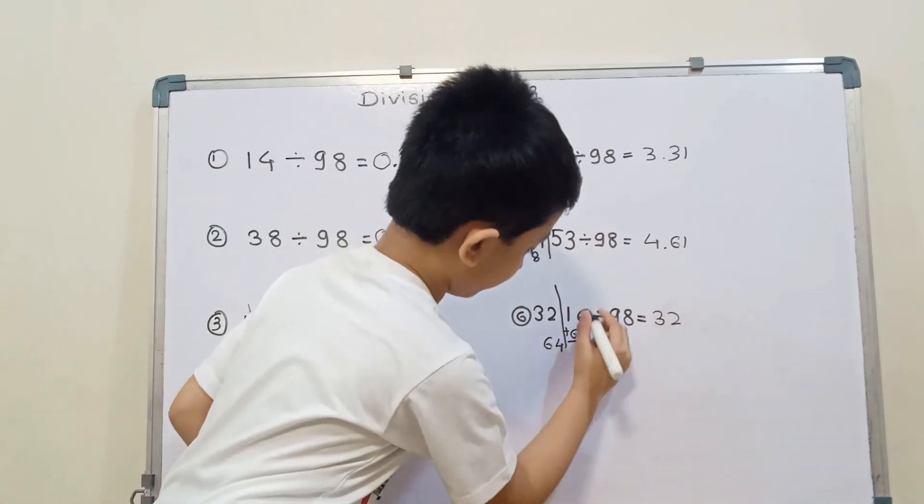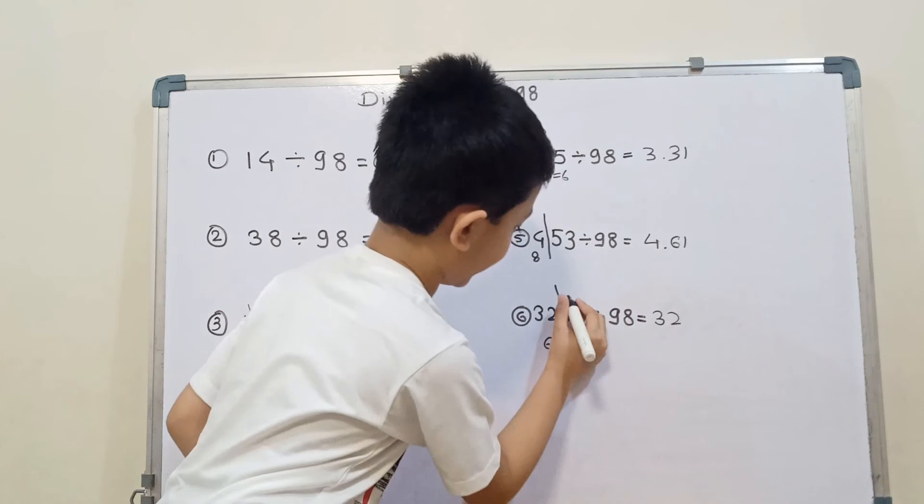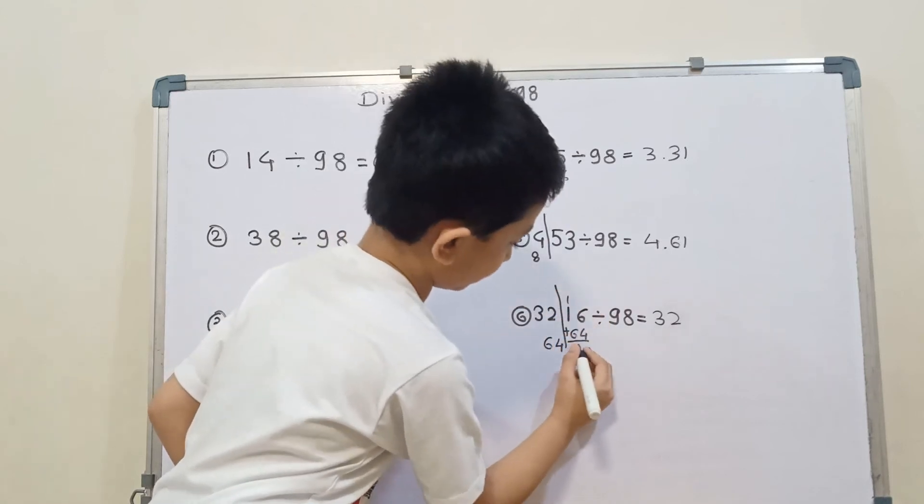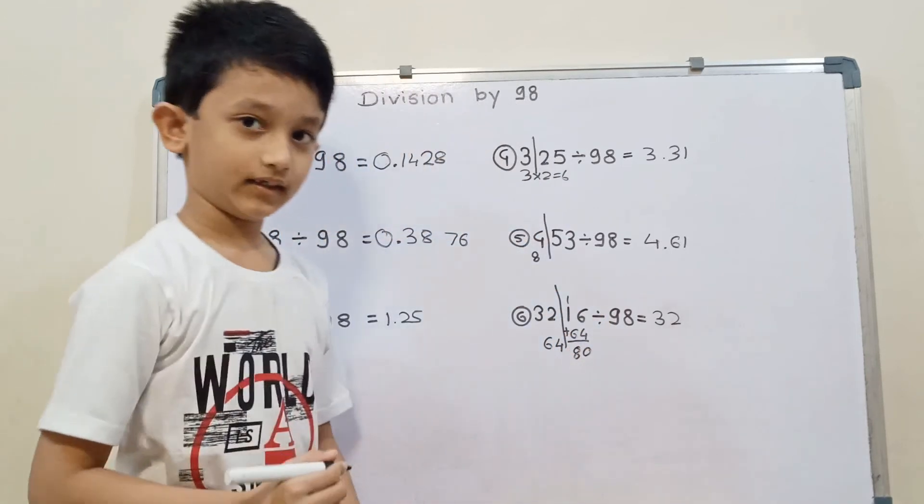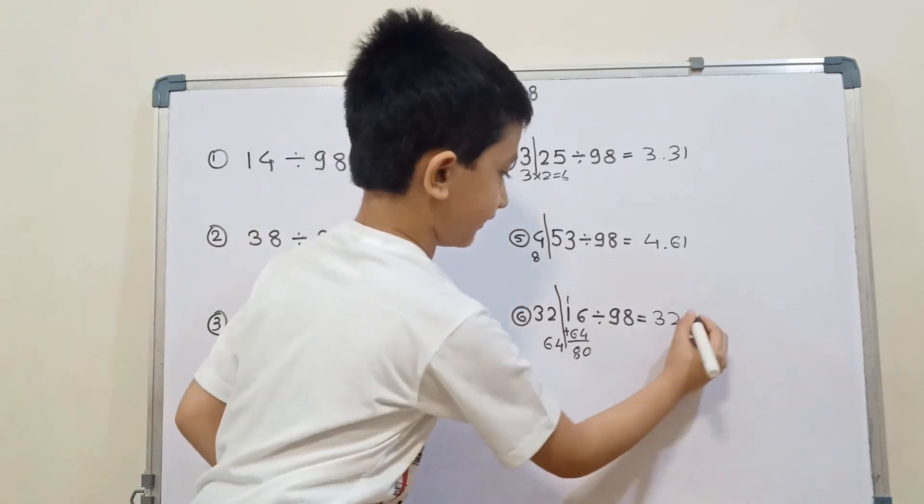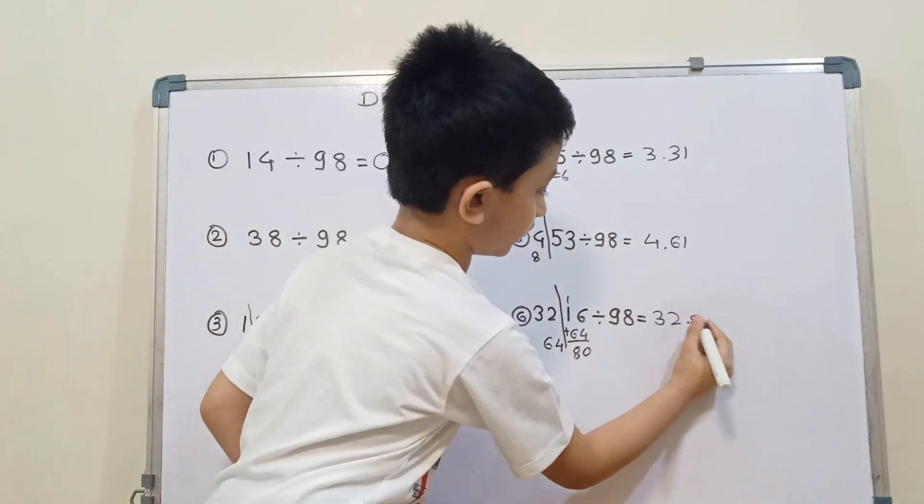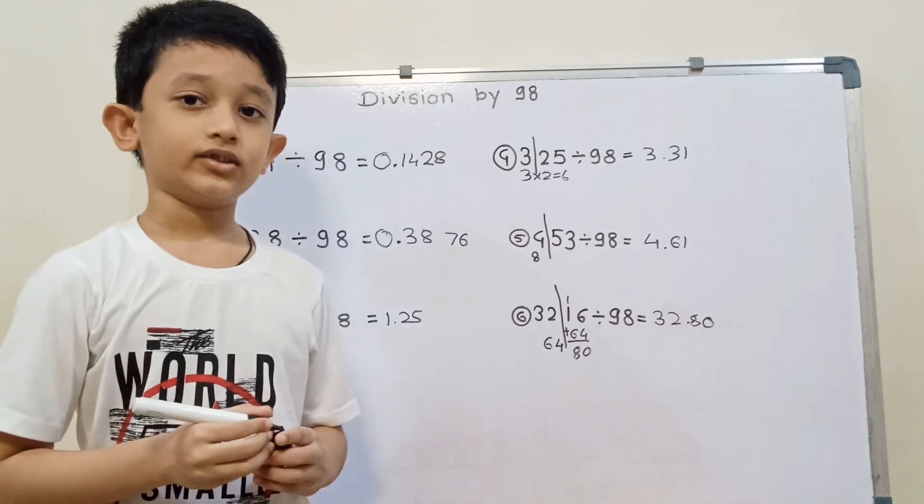The answer is 4 plus 6 is 10. And 1 plus 1 that is 2. And 6 plus 2 that is 8. So the answer is 32.80.